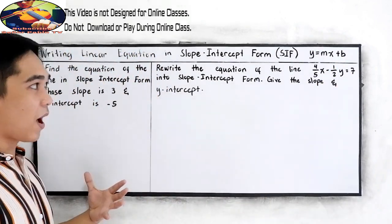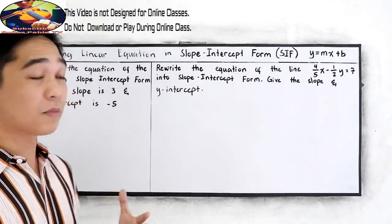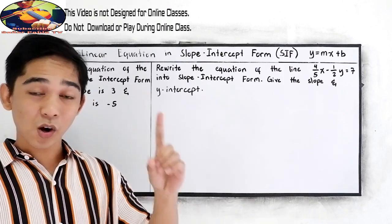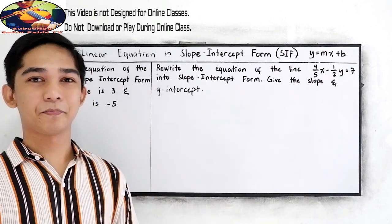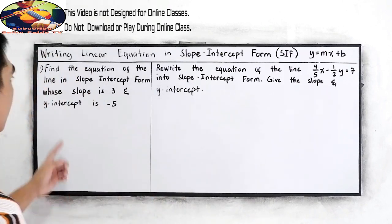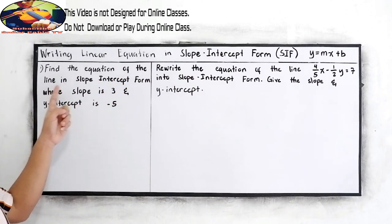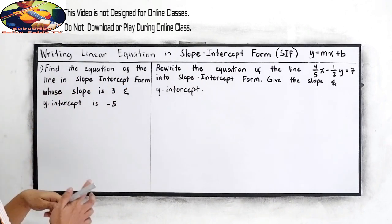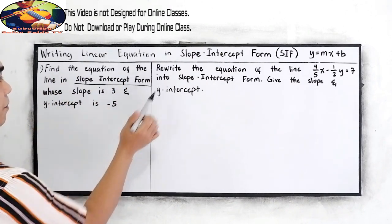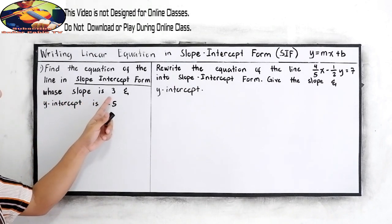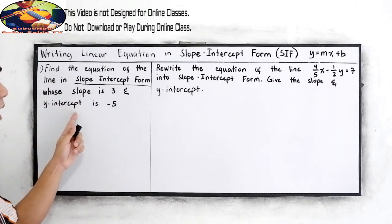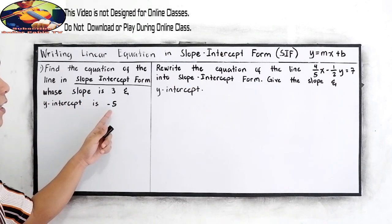These are the possible problems that you are going to encounter. Let's try to solve number one: Find the equation of the line in slope-intercept form whose slope is 3 and y-intercept is negative 5.